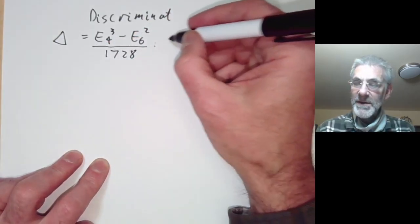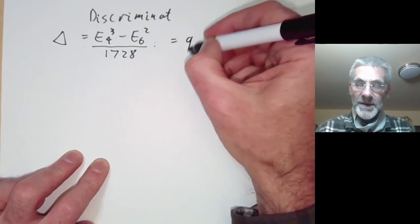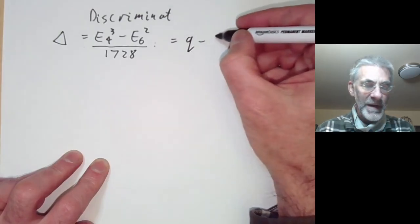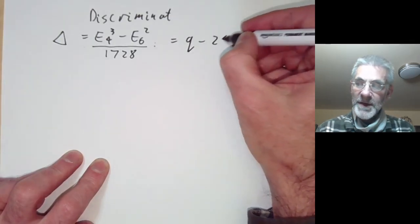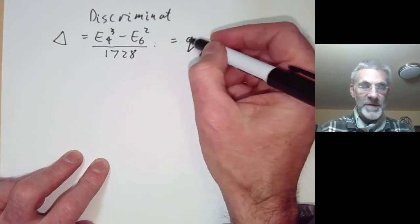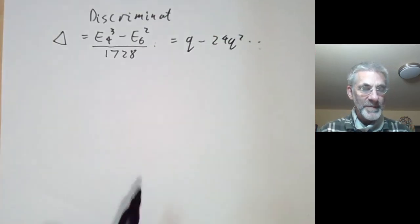The reason for dividing by 1728 is that this makes the Fourier expansion of the discriminant start with a leading coefficient of one.